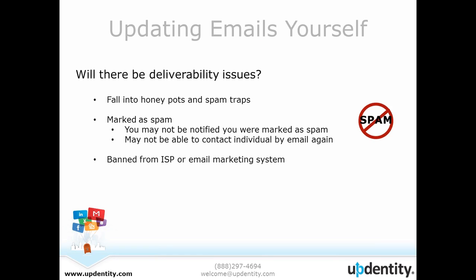I wanted to talk about updated emails. Many organizations may already have addresses and phone numbers due to past communications, but may have had trouble gathering emails from constituents. Some of this is simply because they didn't originally gather this info, or perhaps emails were just jotted down over the phone — I'm notorious for writing things down and not writing it down correctly. With the lack of emails, you may decide you just want to locate these emails yourself. But you have to be aware, because you may fall into spam traps, honeypots. You could be banned from your email marketing company or ISP for sending out too many bad emails. You could find yourself unable to contact an individual because you attempted to contact too many wrong ones.